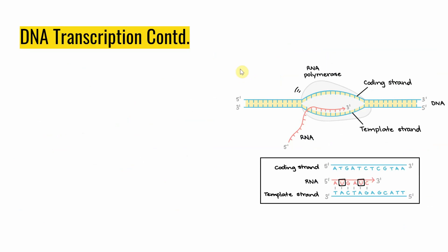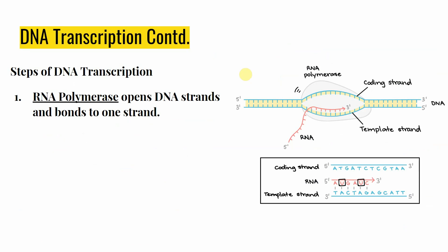We're going to break up DNA transcription into three main steps. The first step involves the key enzyme for this process: RNA polymerase. If you remember from DNA replication, that process used DNA polymerase, but in DNA transcription we use RNA polymerase — which makes sense because RNA polymerase creates RNA. RNA polymerase comes in, opens the DNA strand by itself, unzips it on its own, and then binds to one strand — which we call the template strand — the strand that RNA polymerase will be reading and copying.